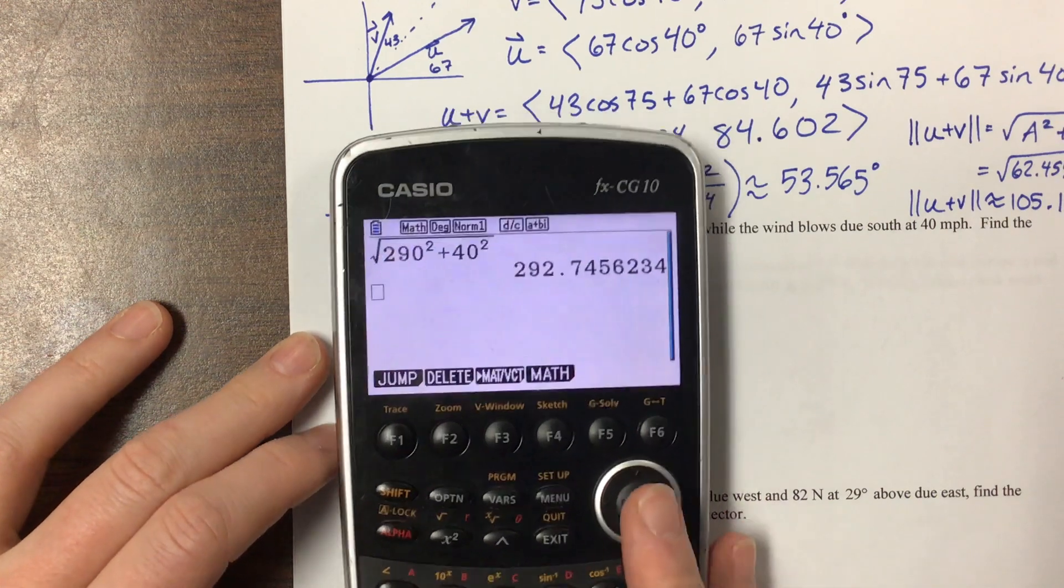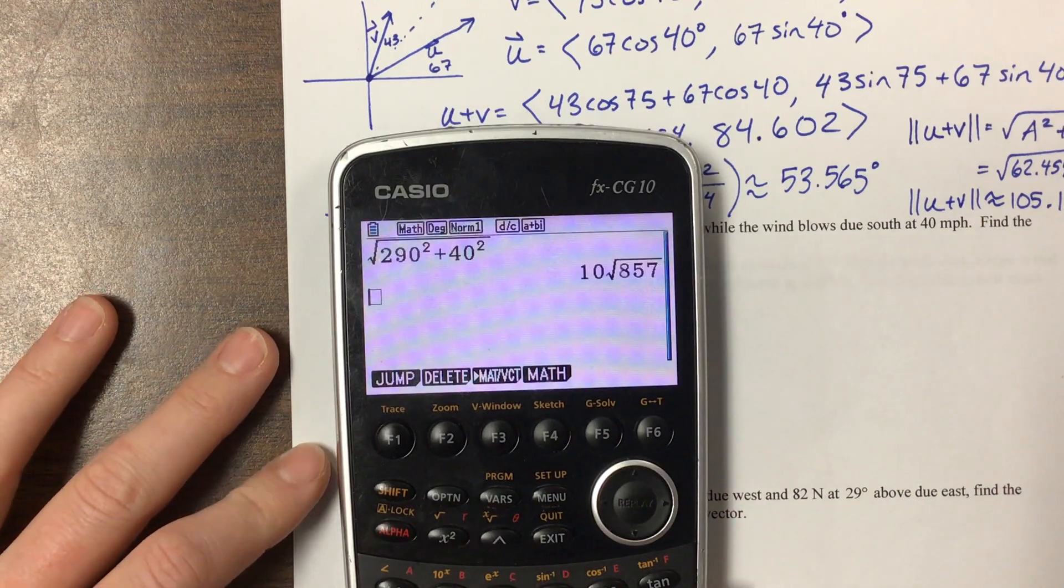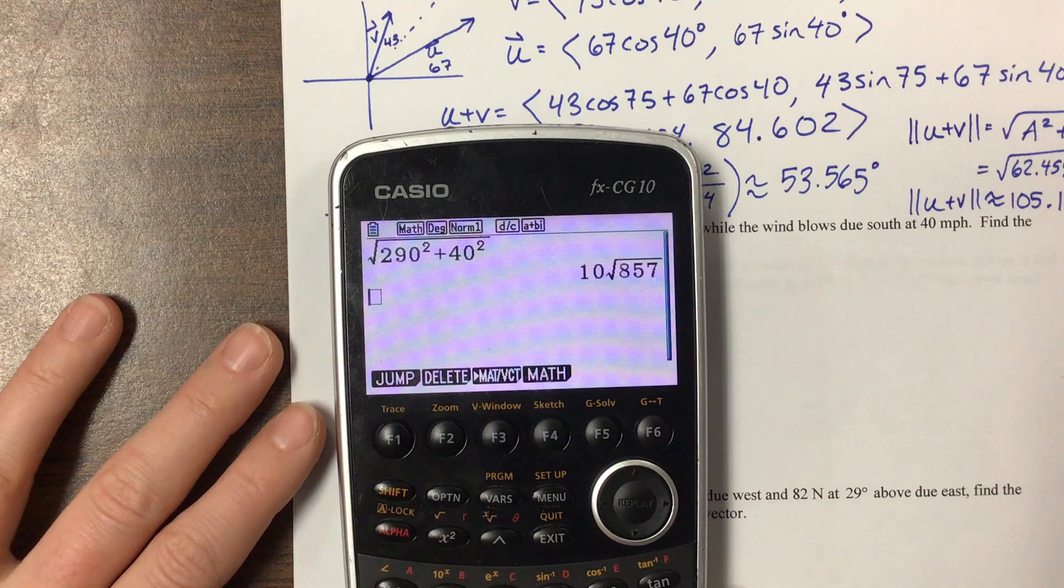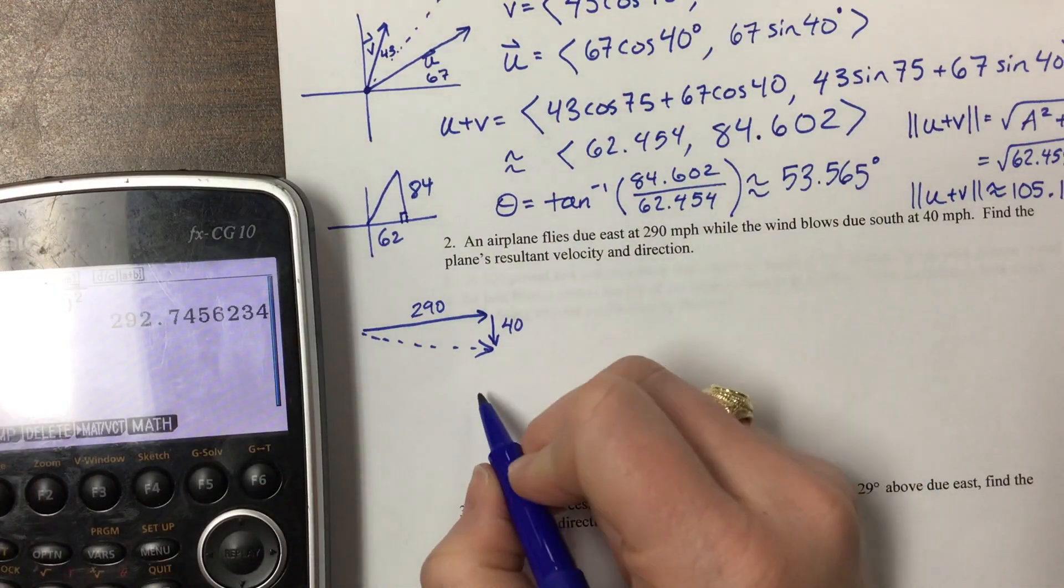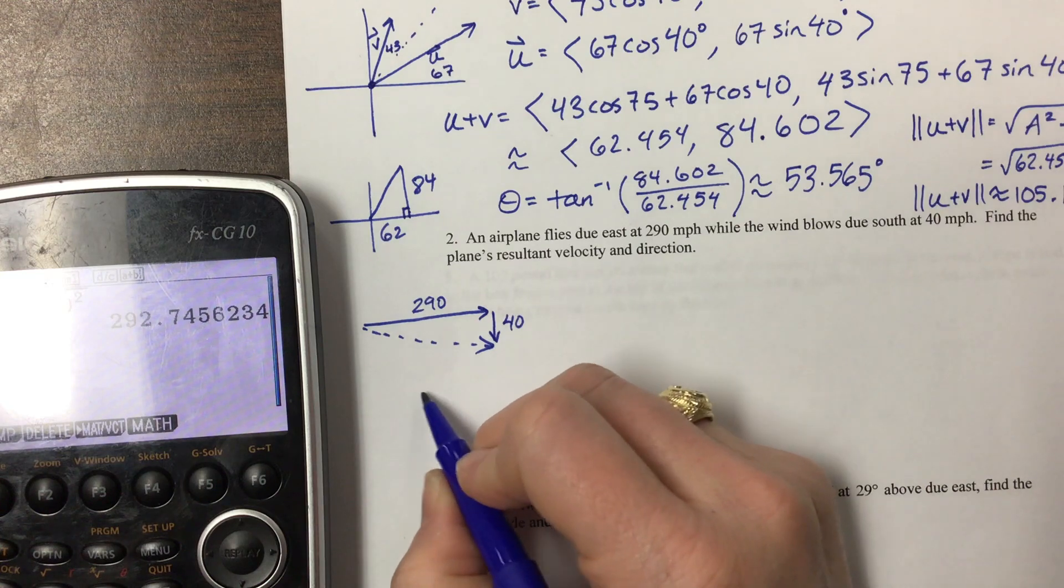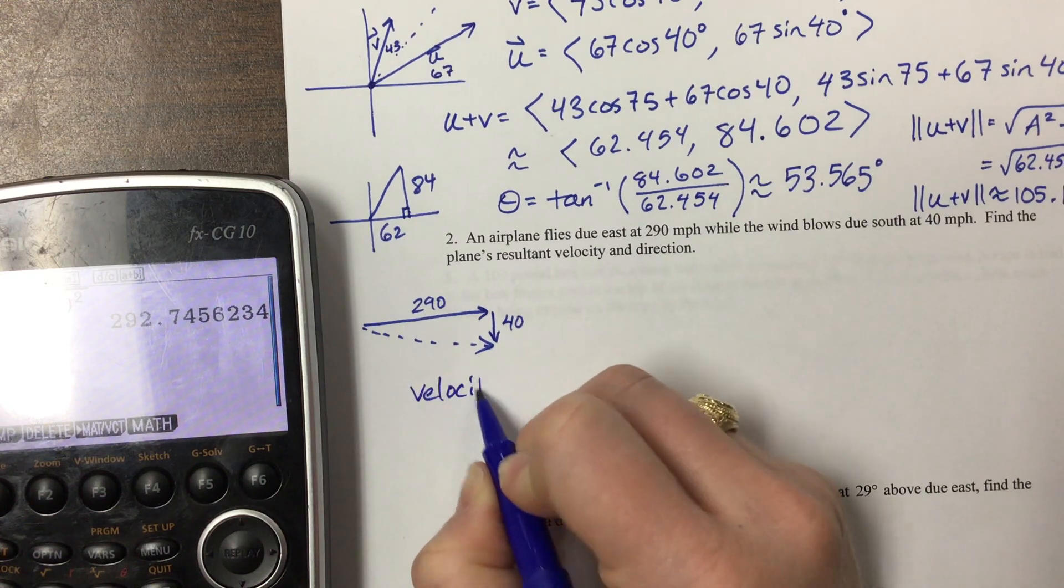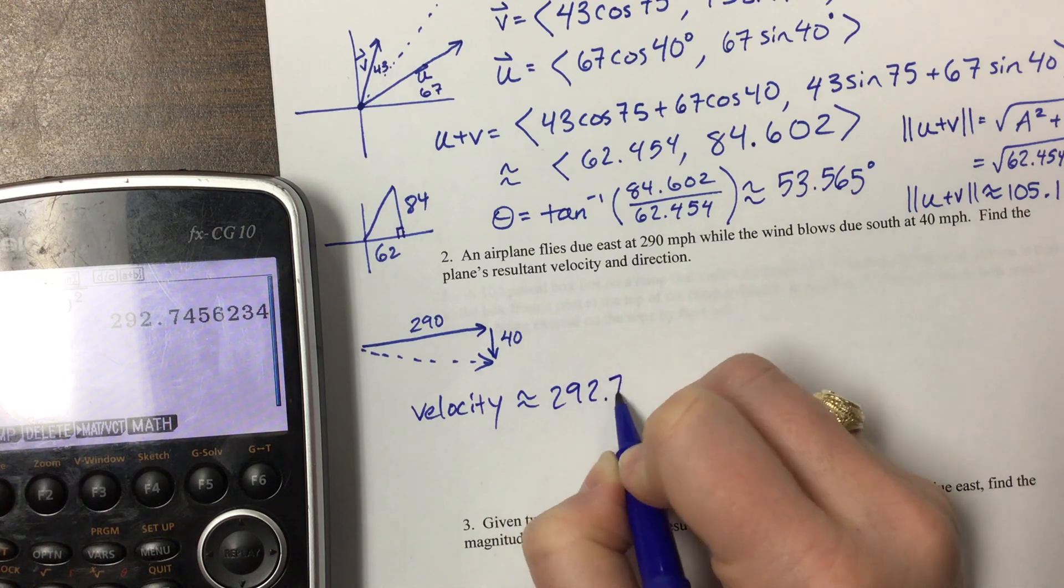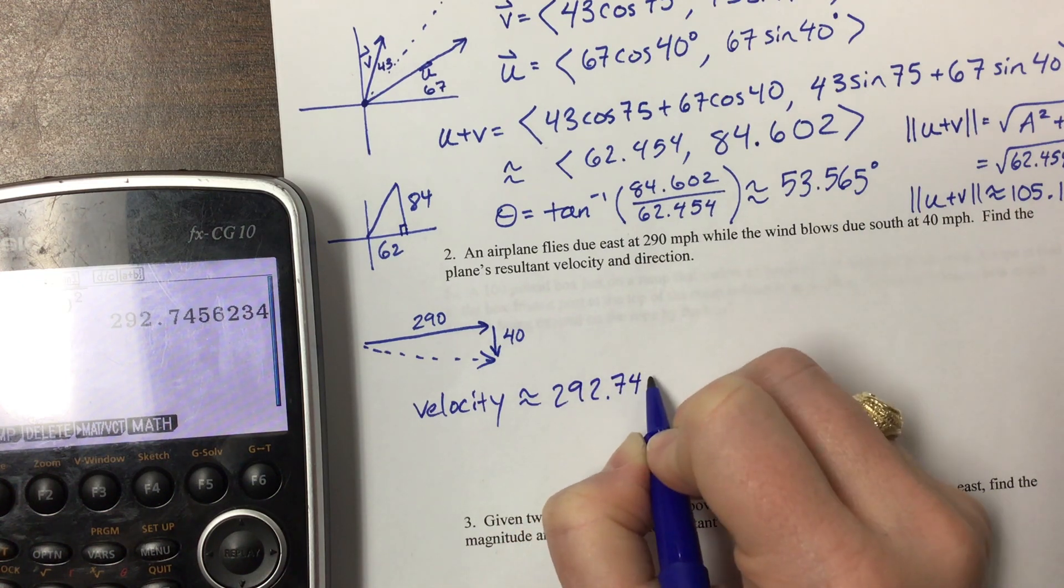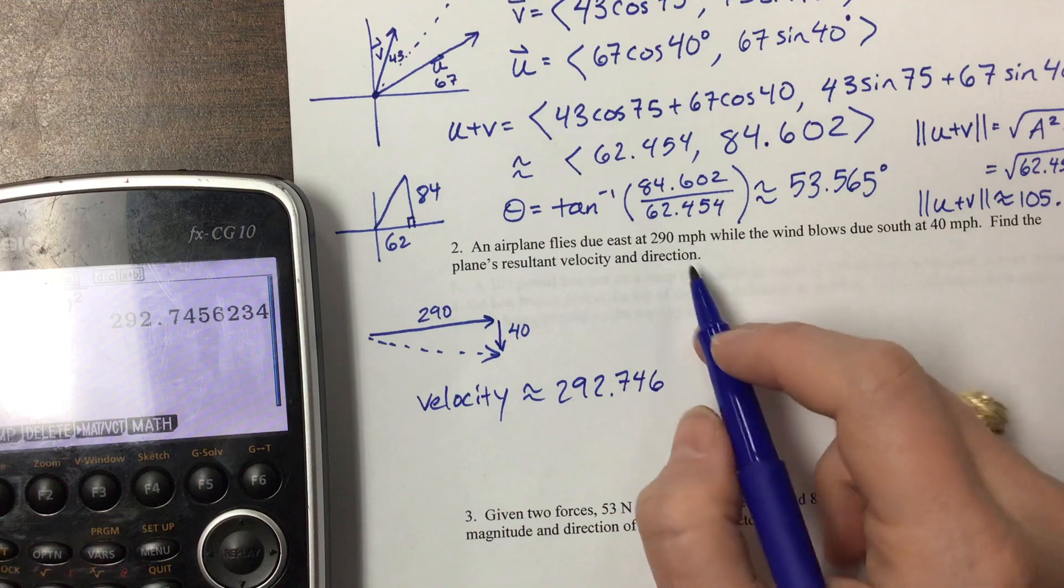That's great. This is lovely, but it doesn't tell us anything in terms of what the plane is doing. So the resultant here is its velocity. The velocity is approximately 292.746 miles per hour.